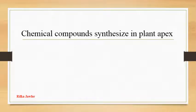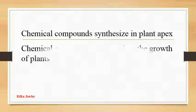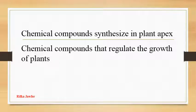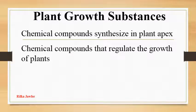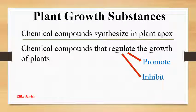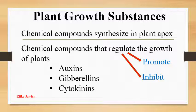It is because there are chemical compounds synthesized in plant apex and these chemical compounds which regulate the growth of plant are called as plant growth substances. Some of these growth substances promote the growth while some others inhibit the growth. Some plant growth substances promoting growth are auxins, gibberellins and cytokinins.